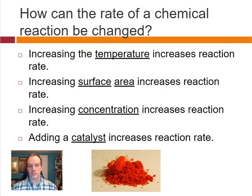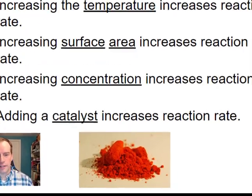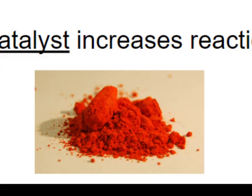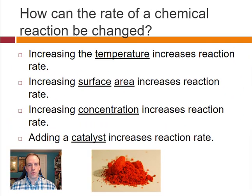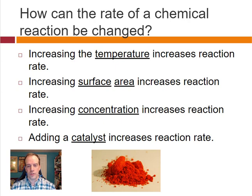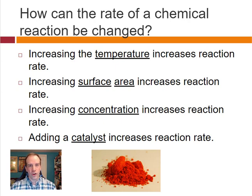If we increase the surface area — taking a clump and grinding it down into powder, like in this picture — that will also increase the reaction rate, because more surface is exposed to react with what it's mixing with. We can also increase the concentration of what we're reacting, so there's more of it per unit volume — more stuff available to actually react.